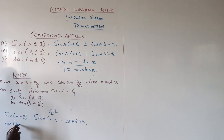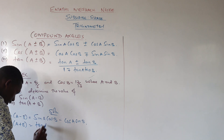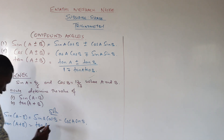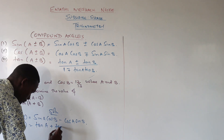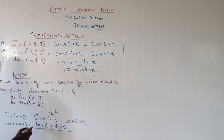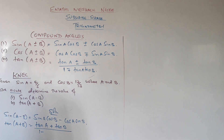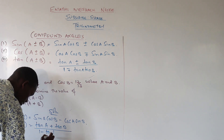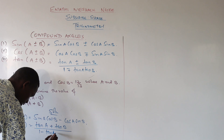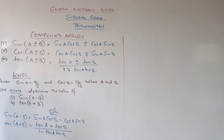Then tan of A plus B expands as: tan of A plus tan of B, all over one minus tan A times tan B. These are your two compound angle relationships.